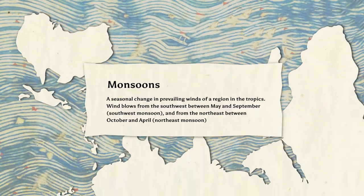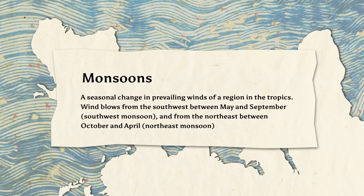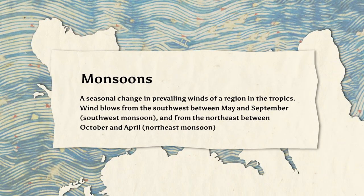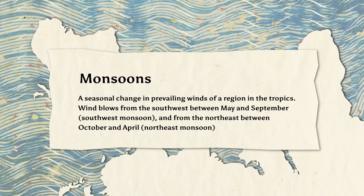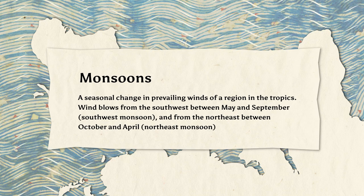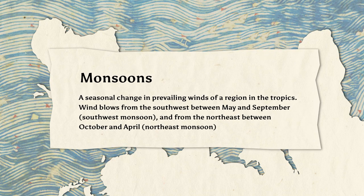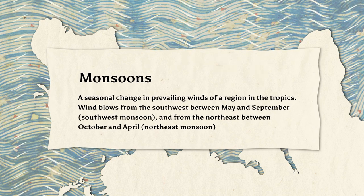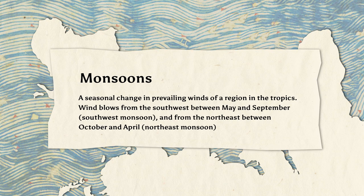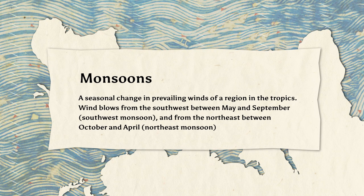Very simply, monsoon seasons are seasonal changes in wind direction. There are two distinct monsoon seasons across Asia: the northeast monsoon and the southwest monsoon.